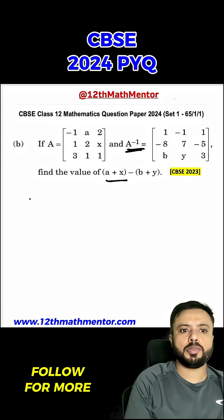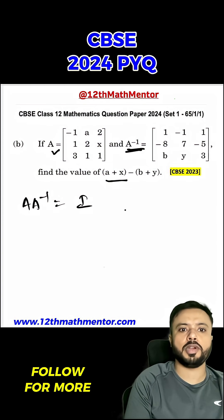To solve this question, we are going to use a particular property of matrices which is A into A inverse equals identity matrix. Since A is given and A inverse is given, we will multiply and equate it to identity matrix.